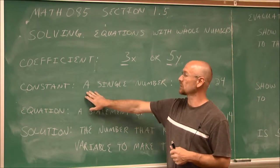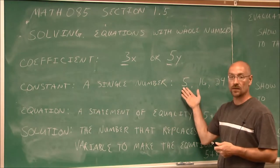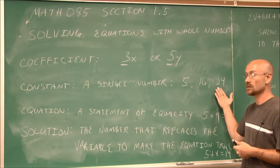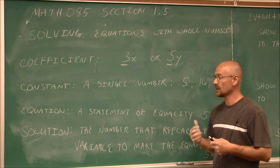All right, the next term is a constant. A constant is just any number. A single number, five is a constant. 16 is a constant. 24 is a constant. So anything that's just a number, we call it a constant. That's its definition.